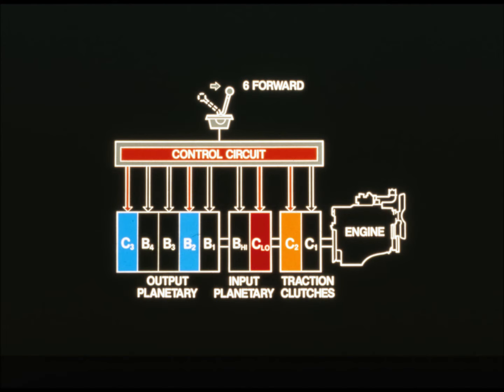The control circuit valves then direct oil to engage the various clutches and brakes that produce six forward. Six forward happens to be a combination of C2, C-low, B2, and C3. If you need more detailed information about which clutches and brakes are engaged for any particular speed, consult your technical manual.